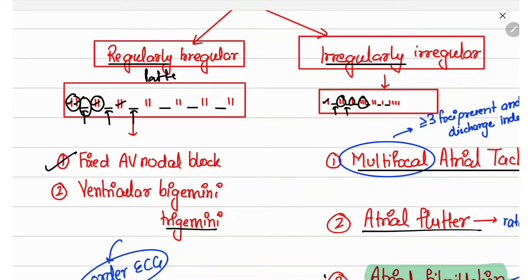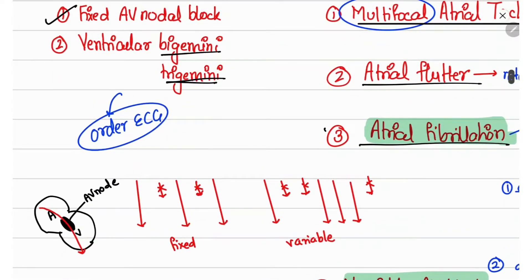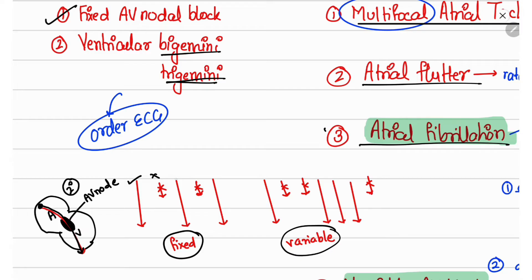Regularly irregular pulse is present in cases of fixed AV nodal block. Normally the SA node generates an impulse that travels from atria to ventricles through the AV node. If the AV node cannot transfer all impulses from atria to ventricle, it is called a second degree block. The pattern of blockage can be fixed or variable — for example, first impulse passes, second does not, third passes, fourth does not — this is a fixed pattern. Alternatively, first passes, second does not, third passes, one does not — this is a variable pattern.